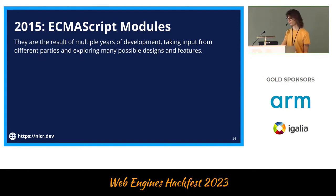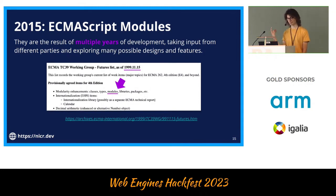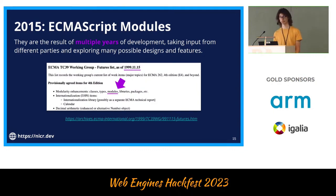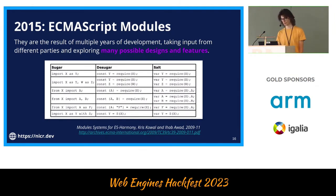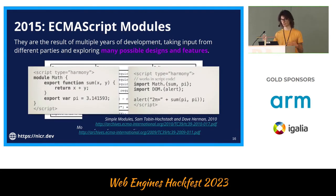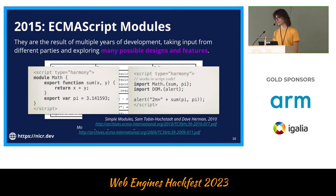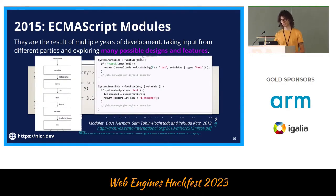It took a very long time to define how ECMAScript modules should work. In 1999, people were already starting to think about how to standardize modules in JavaScript. There have been different iterations — some more similar to CommonJS, others more different. At some point it started as syntactic sugar on top of CommonJS. There were ideas for modules wrapped in scopes, and import statements were at some point proposed to look more like Python than what we have now. There were also discussions about how to customize loading modules and the different stages for loading modules.